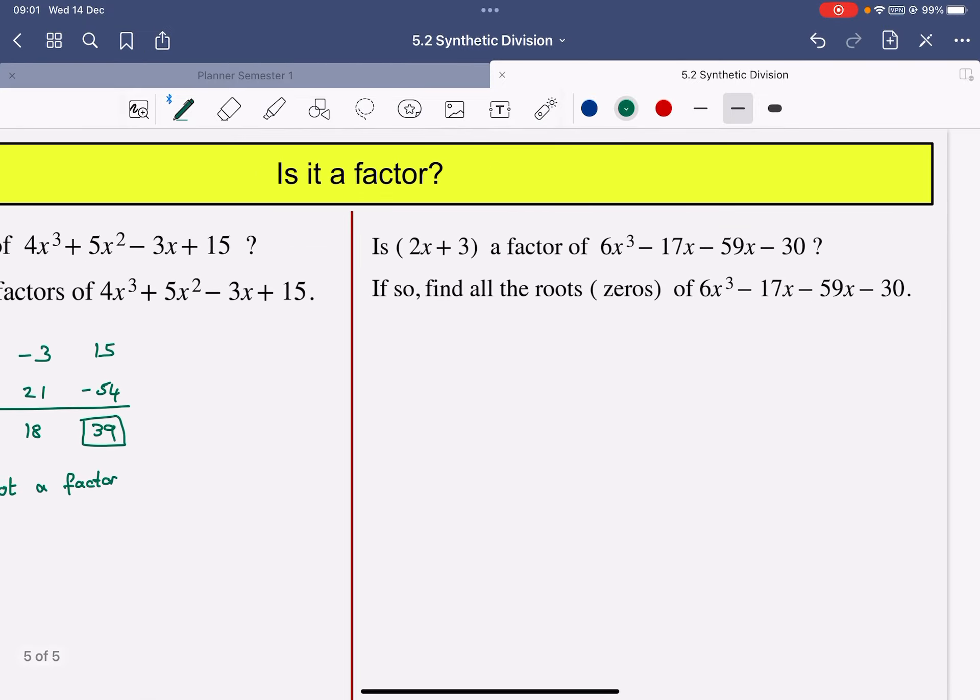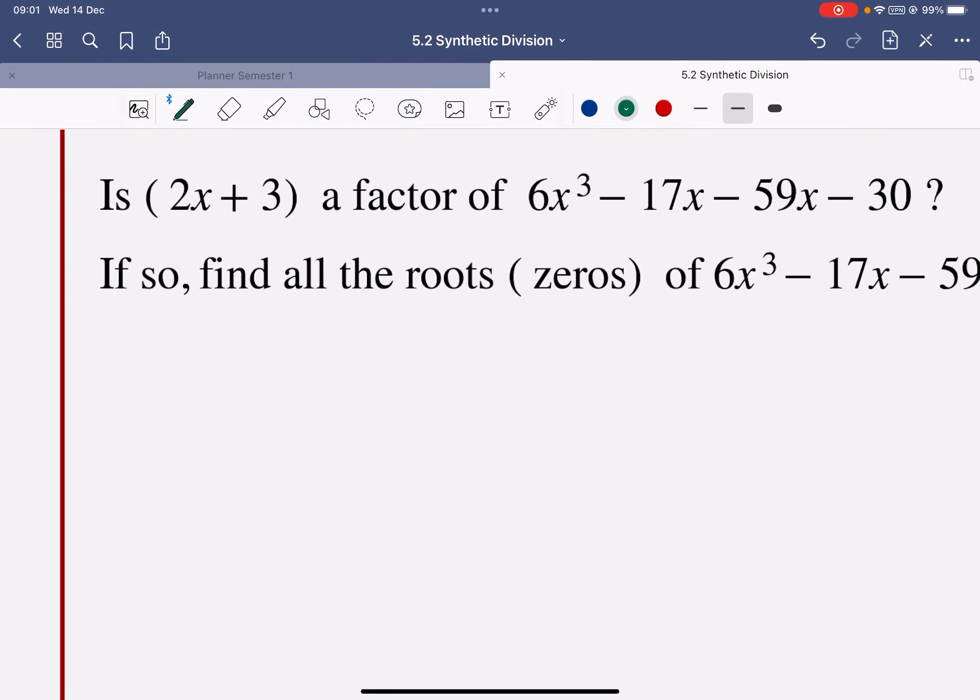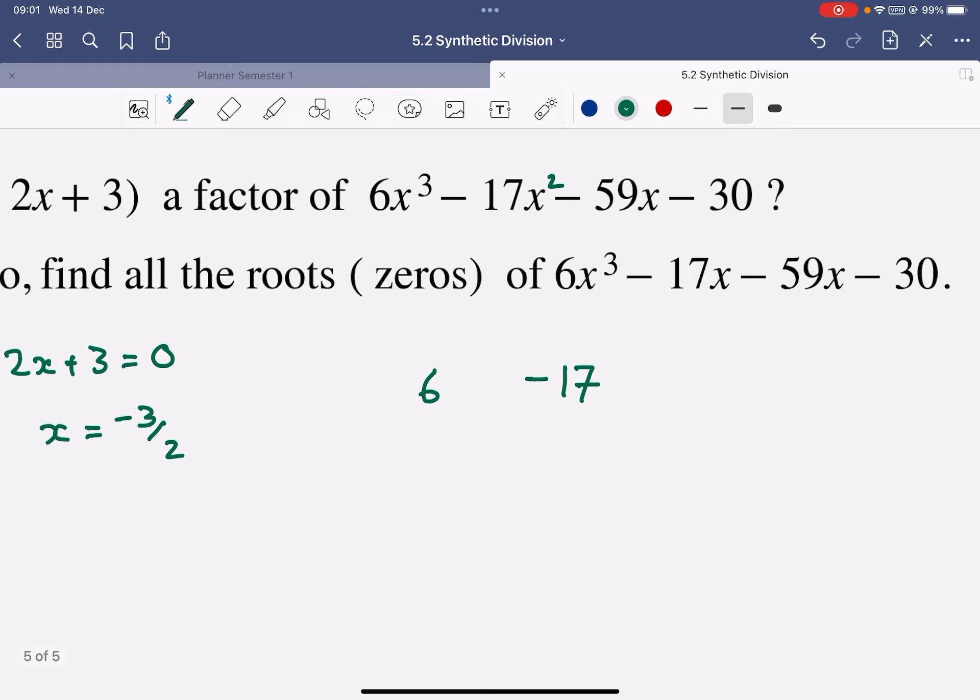So let's go on and do the next one. So first of all, I want that bracket to be 0. So x is going to be negative 3 over 2, not the easiest one to work with. Let's copy down my coefficients. I think that's supposed to be x squared minus 59 minus 30.